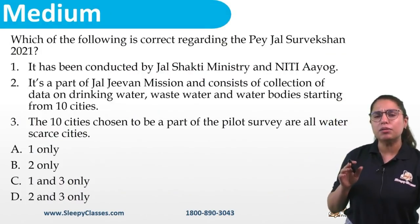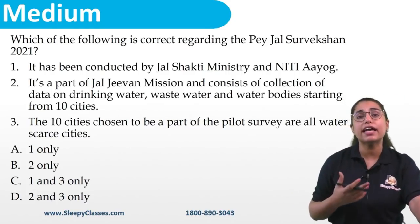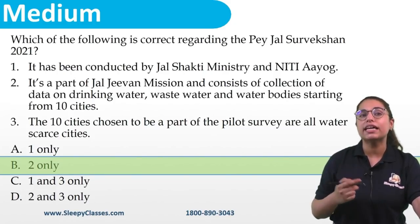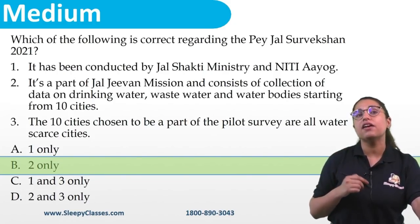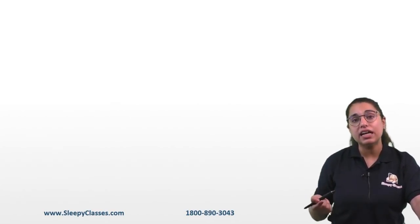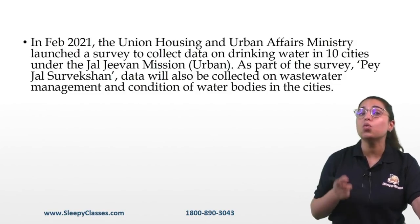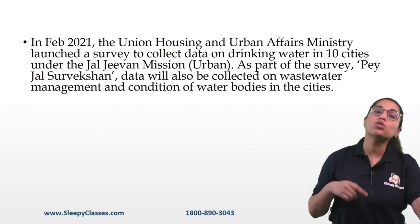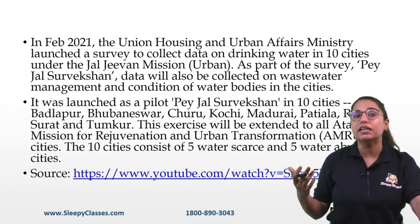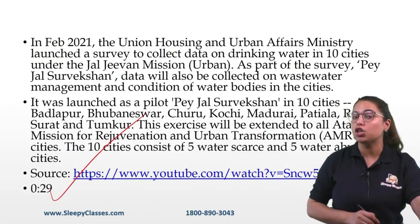Next is a medium-level question about Jal Parakhsha Sarvekshan (Paid Job Certification). The correct answer is only the second statement. The Jal Parakhsha Sarvekshan comes under Jal Jeevan Mission Urban, under the Ministry of Housing and Urban Affairs. The pilot survey covered 10 cities — 5 water-scarce and 5 water-abundant. A Maha Pre-cure lecture covered this topic in detail.